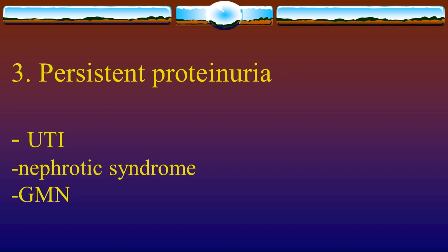Persistent proteinuria causes include urinary tract infection, nephrotic syndrome, and glomerulonephritis (GMN).